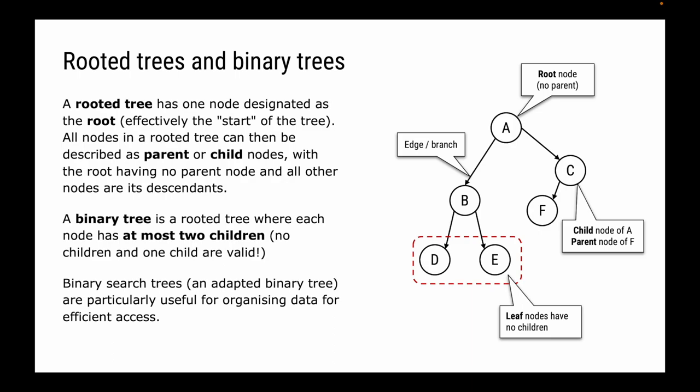Let's talk about two more specific types of trees: a rooted tree and a binary tree. A rooted tree is a tree where one node has been designated as the root — that's the start of the tree, and this node has no parent. Every other node in a rooted tree can be called a parent or a child node. The root has no parent but it does have children. In this example, A is our root node. C is a child of A, but it's also a parent of F.